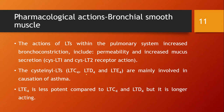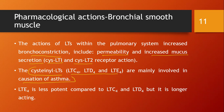On bronchial smooth muscle: leukotrienes cause increased bronchoconstriction, increased vascular permeability, and increased mucus secretion. These actions are CysLT1 and CysLT2 receptor-mediated. Cysteinyl leukotrienes — LTC4, LTD4, and LTE4 — are mainly involved in the causation of asthma.